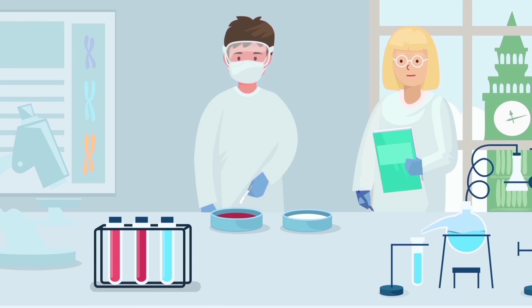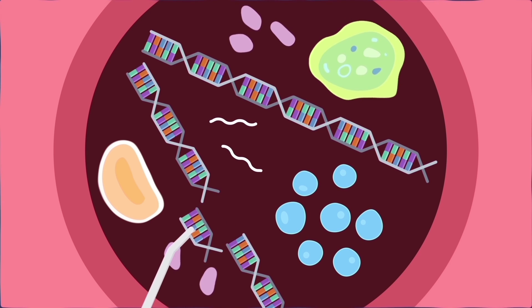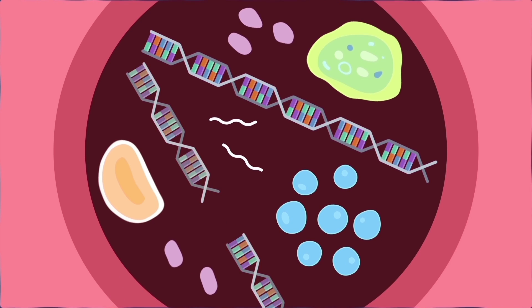Scientists modified her T-cells by giving them an extra gene that would target and attack leukemia cells. They also disabled other genes so they won't attack the immune system of the girl.